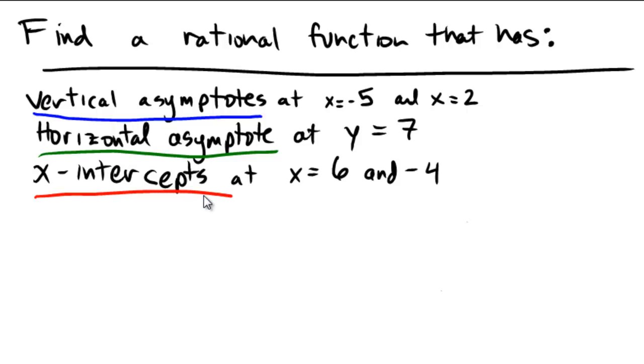Okay, so to create this, we're going to have to create a function that has vertical asymptotes at x equals negative 5 and x equals 2. So as I try to define such a function, we're going to have to make sure that we have vertical asymptotes, which would be denominator issues, at x equals negative 5 and at x equals 2.